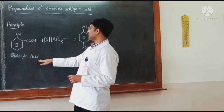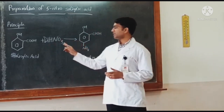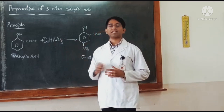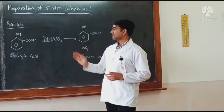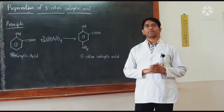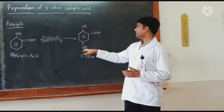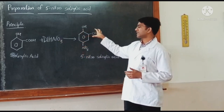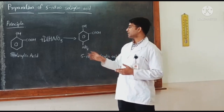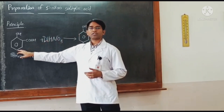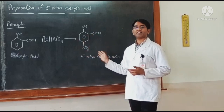There occurs a reaction between these two reactants. The type of reaction happening is electrophilic substitution reaction. When salicylic acid is treated with nitric acid, it undergoes electrophilic substitution reaction where the nitro group comes to the fifth position of salicylic acid. That results in the formation of 5-nitrosalicylic acid. During substitution, the hydrogen atom at the fifth place of the aromatic ring is replaced with a nitro group.